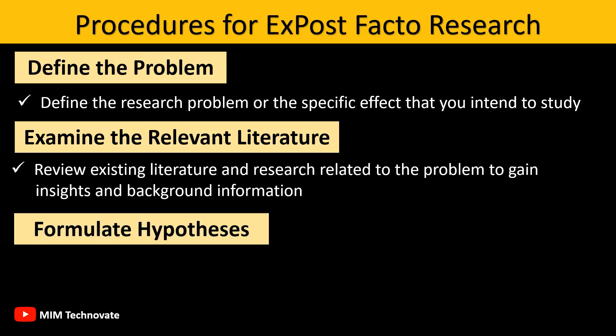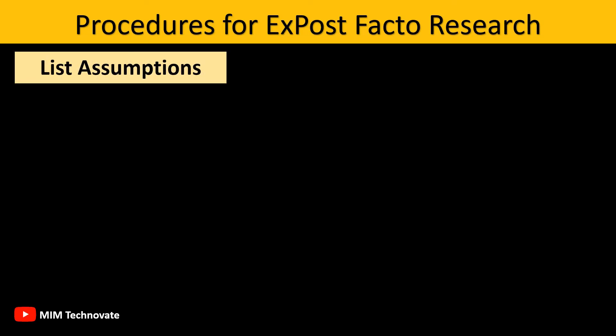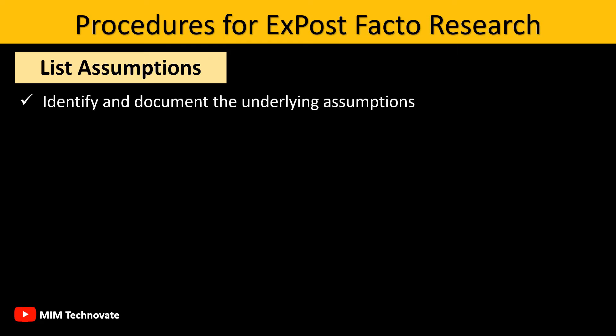Step 3 — Formulate Hypothesis: Develop hypotheses or educated guesses about possible solutions or factors that might have contributed to the observed effect. Step 4 — List Assumptions: Identify and document the underlying assumptions that serve as the foundation for the hypotheses and the research procedure.